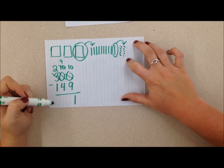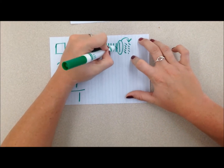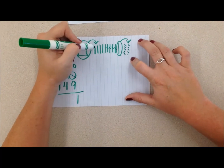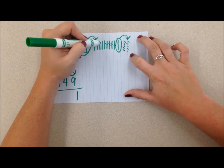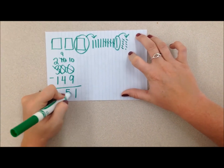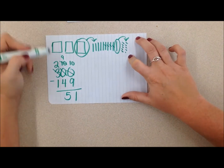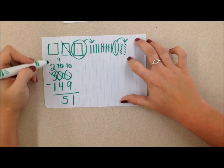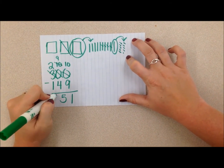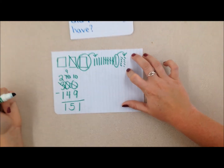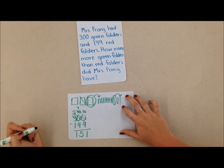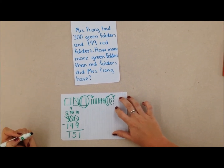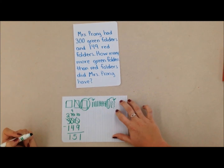I can also subtract 4 tens: 1, 2, 3, 4 tens. And when I do that, I'm left with 5 tens. And then I can subtract 1 of my hundreds. When I do that, I'm left with 100. So she has 151 more green folders than red folders.